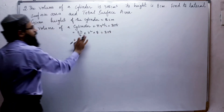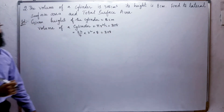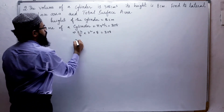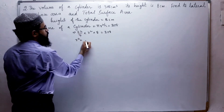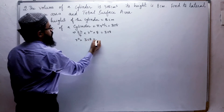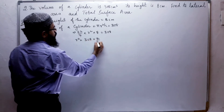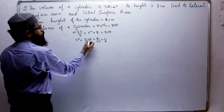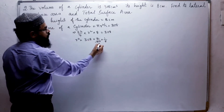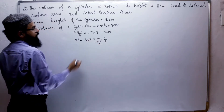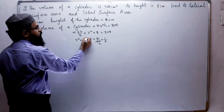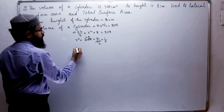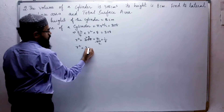So, 308 — except r², we will send everything to the other side. So r² equals 308 × 7/22 × 1/8. Here, 11 twos are 22, so 22 cancels. 11 eights are 88, leaving 8. So r² is equal to 49/4.